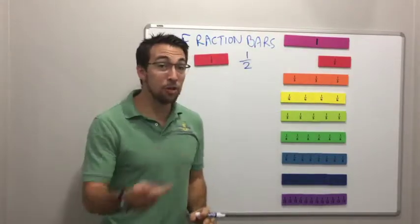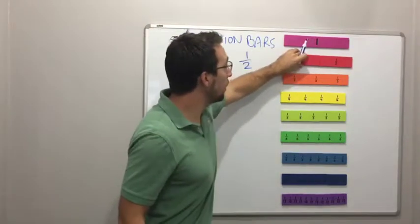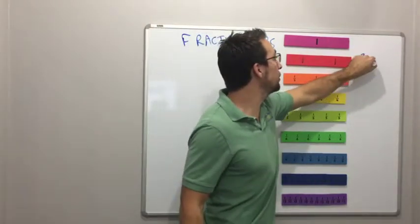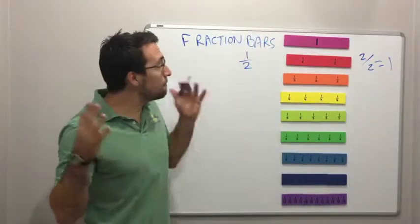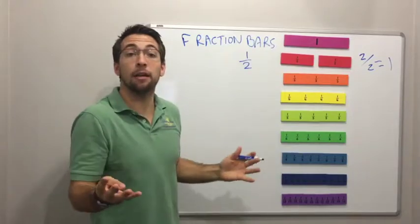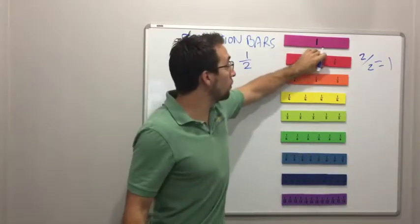What happens when you get two out of two? Oh, I have two pieces out of two. That equals one. If you have two pieces out of two, you have the full thing. So fraction bar, one.